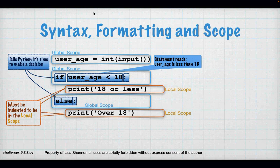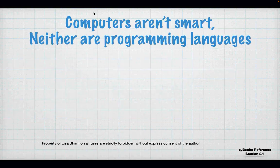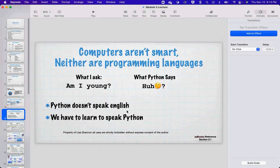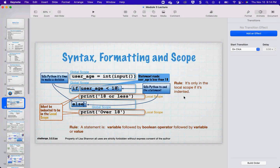Then we have the colon. The colon can be the bane of students' existence. It basically acts as the question mark — it tells Python where the statement you're evaluating stops. Without the colon, Python won't get anything right and you'll get weird errors. The colon is required for if, elif, and else, and you'll also deal with it in looping and functions. It's very important and can drive people crazy.